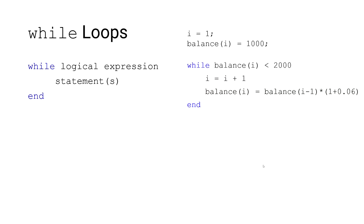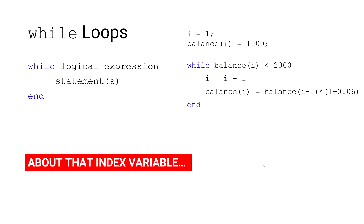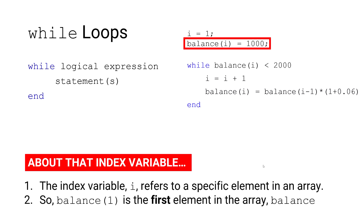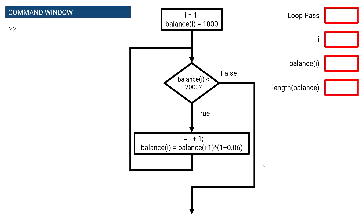Our index variable i is used to refer to a specific element in an array. So balance of one is the first element in the array balance. Our goal is to store the end-of-year account balance for each year until that balance meets or exceeds $2,000. Now let's take a look at a flow chart to visualize each loop pass and how the current year's balance can be stored inside of an array.